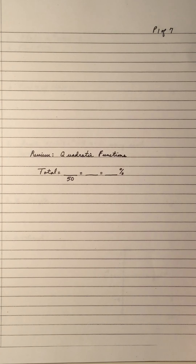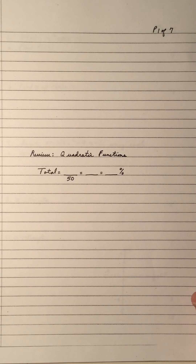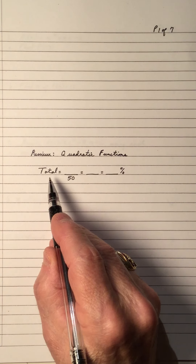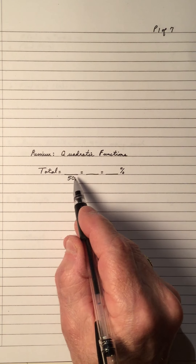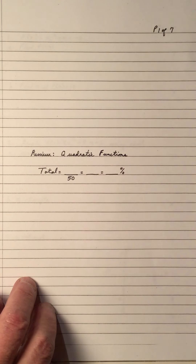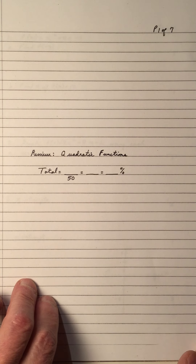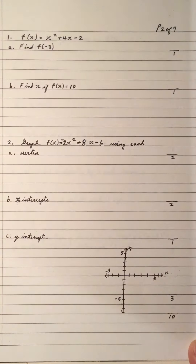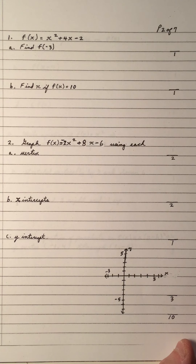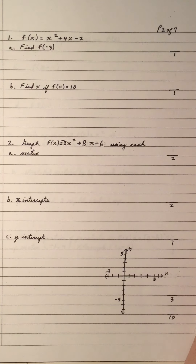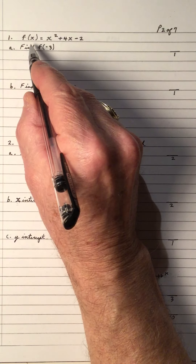Hi, welcome to my video on the review of quadratic functions. As in all my reviews, I treat my review as a quiz. This quiz is out of 50, so this is page one of seven — there are six more pages to come. Do each of the questions, give yourself a mark, total at the bottom of each page, and get your score at the end. Pause your video for each question, work out the answer, and give yourself a score.